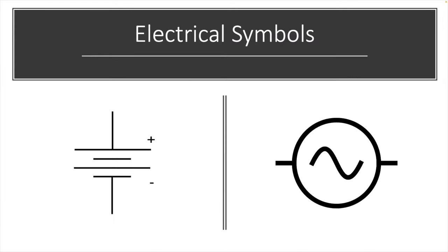Now, these are the electrical symbols for AC and DC. To the left, we have a DC power cell — two cells — and you can see it's polarized. The longer line at the top represents the positive and the shorter line at the bottom represents the negative. To the right is an AC waveform symbol. It's not polarized, so you just have the symbol for an AC waveform.